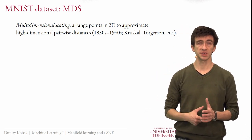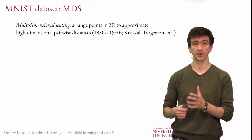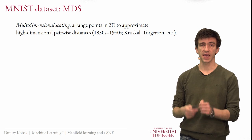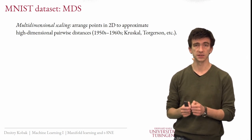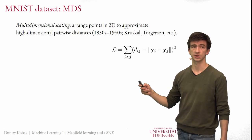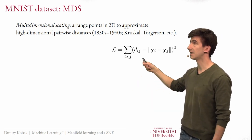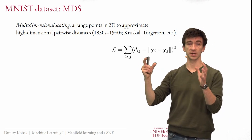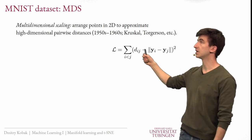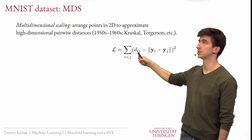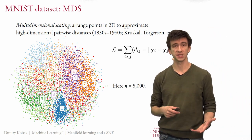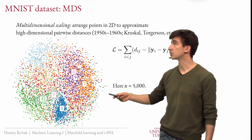I am going to start presenting nonparametric methods with multidimensional scaling, a very old method from the mid-20th century developed in the 1950s and 60s. The aim of MDS is to arrange points in two dimensions such that pairwise distances between points are preserved as well as possible. Here is the loss function of MDS: these are the original pairwise distances — Euclidean distance between every MNIST digit — and we want to arrange points in two dimensions such that the Euclidean distance in the embedding is as close as possible to the original distance, using mean squared error as our loss.